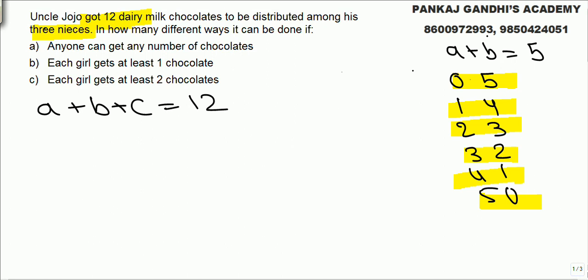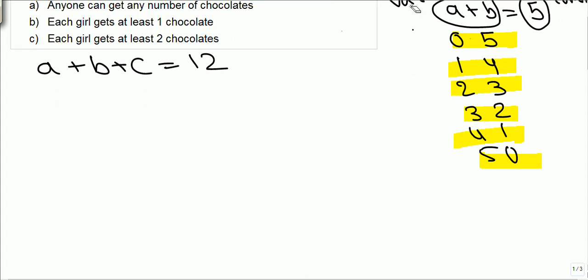Now we'll call this number of variables. How many variables are there? 2. And what is this is the constant, only 5 chocolates are there. So in how many different ways it can be given?